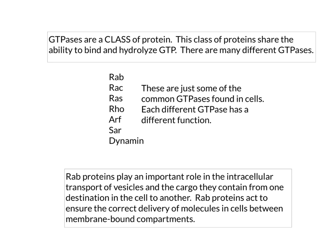We've talked about some of these in class: RAB, RAC, RAS, Rho, ARF, SAR, Dynamin, and there are many others. RAB stands for RAS-associated protein found in brain. RAS was the founding member of this class of GTPases, also known as small GTPases.